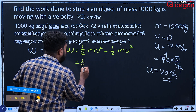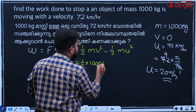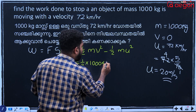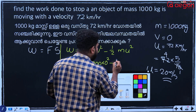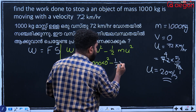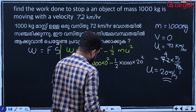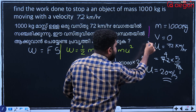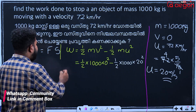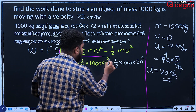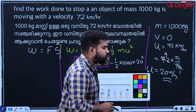Half mv squared into v squared — these are the values. I am doing this. These will be our values, and you can multiply and divide the values accordingly.